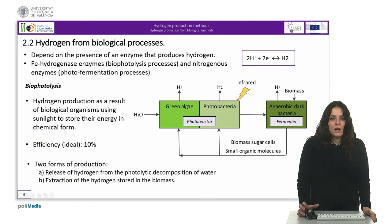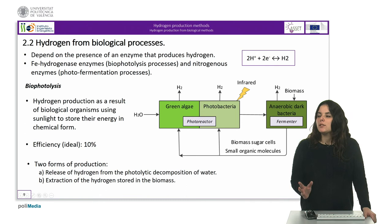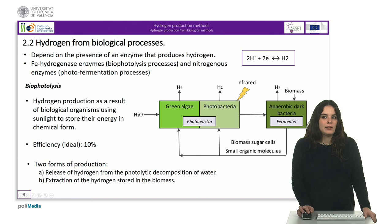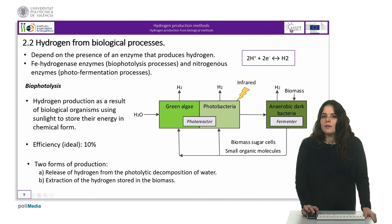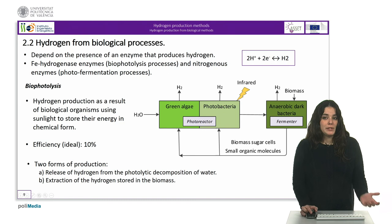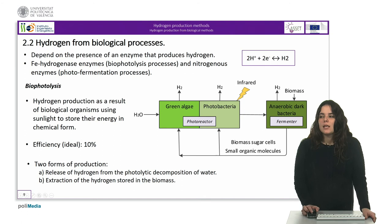We will now discuss the different biological processes to obtain hydrogen, which depend on the presence of an enzyme that produces hydrogen. These enzymes catalyze the chemical reaction shown in this equation. Hydrogenase enzymes are used in biophotolysis processes, while nitrogenase enzymes are used in photo-fermentation processes. Let's start by explaining the biophotolysis system.